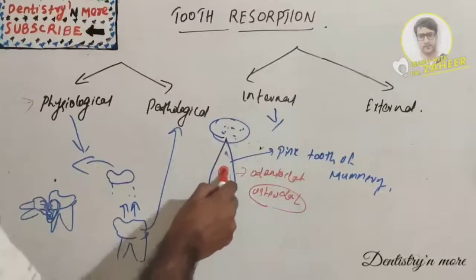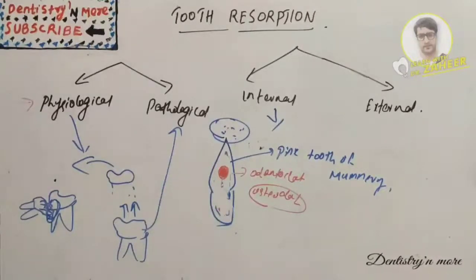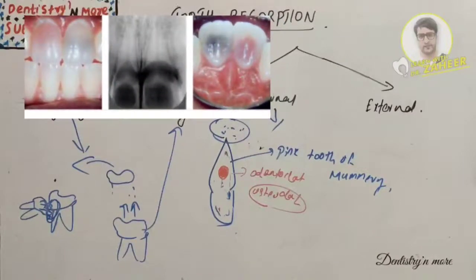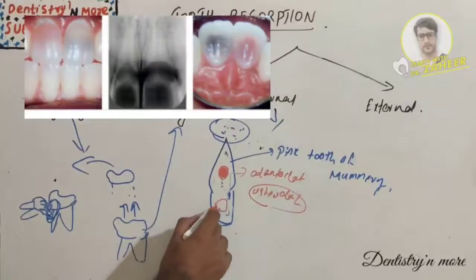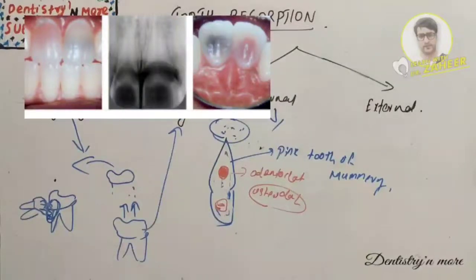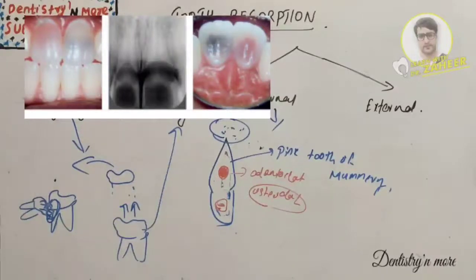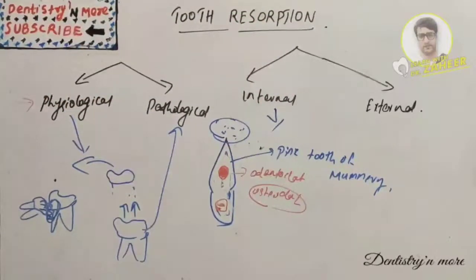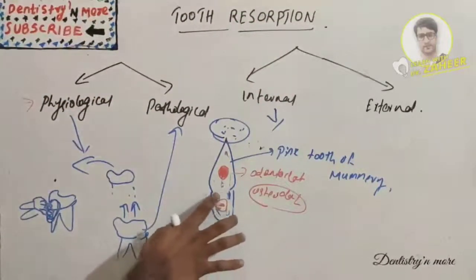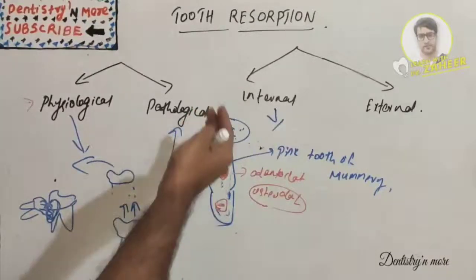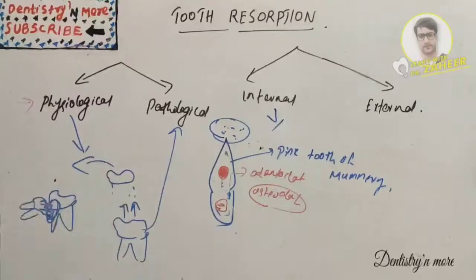The walls of the root canal system balloon out. Resorption can begin in the clinical crown area, which is typically enlarged and varies in size and location. Clinically, a pink spot in the coronal dentine is due to granulation tissue just under the enamel. A pulp test is likely to be positive because the pulp remains partially vital.